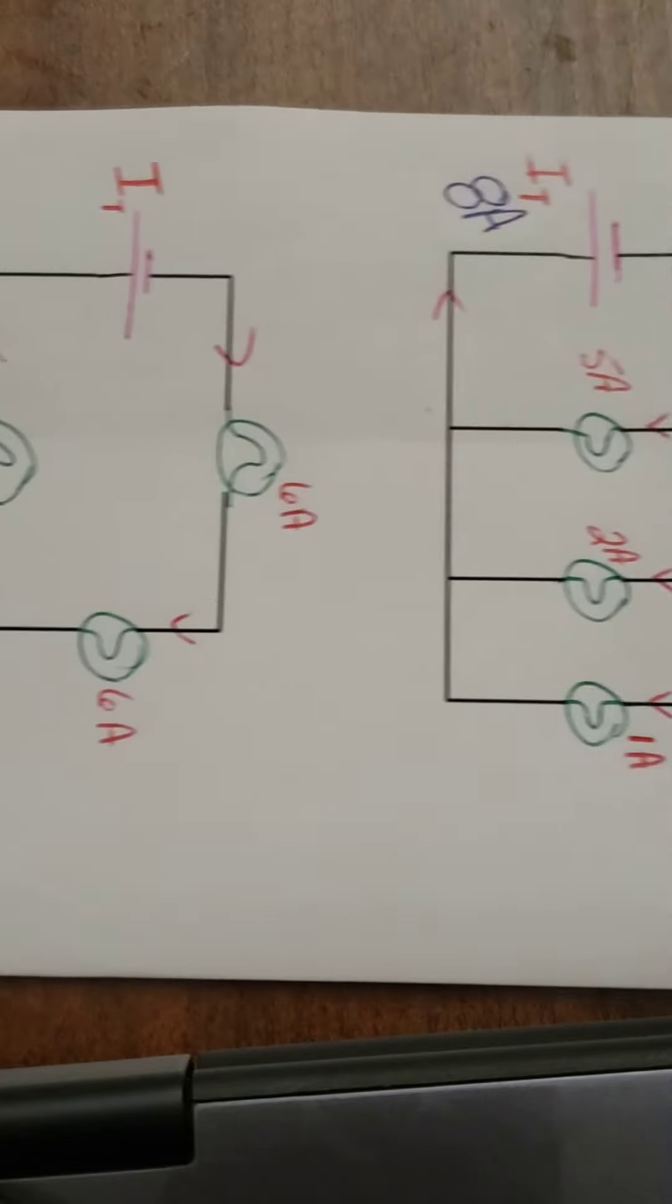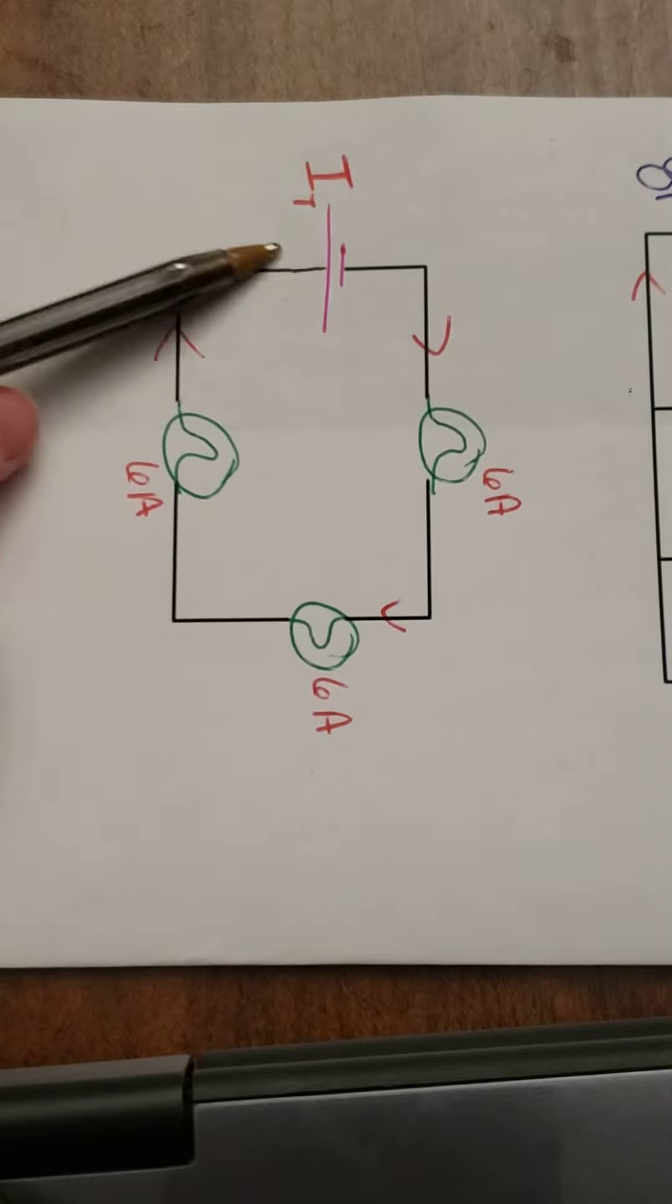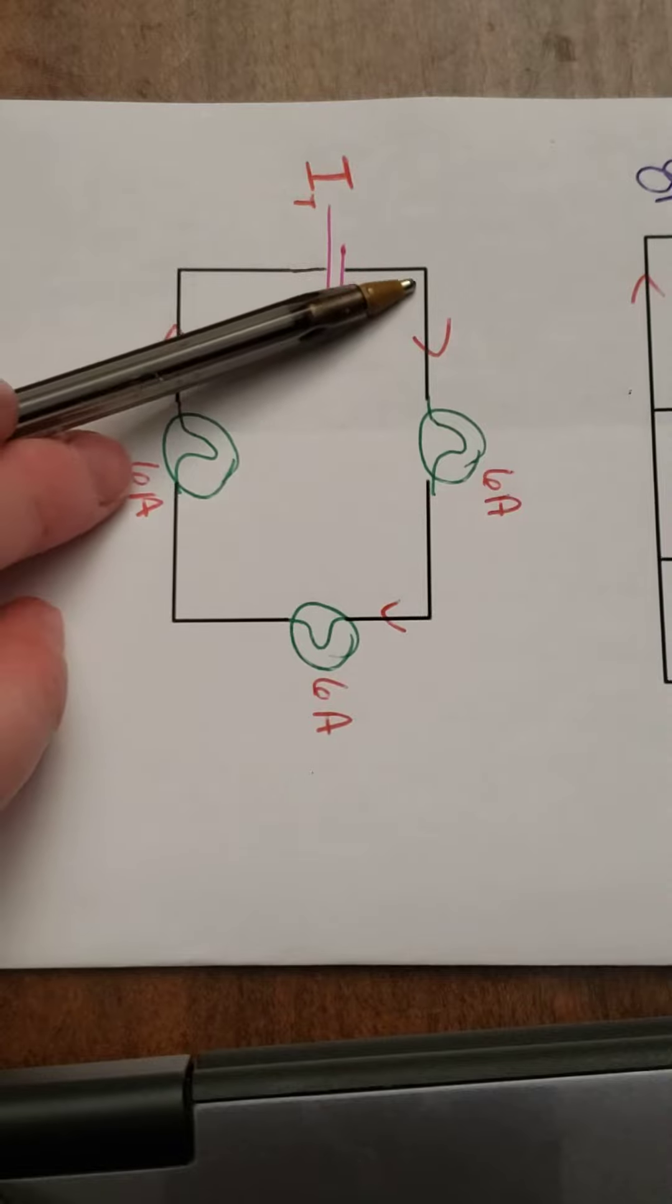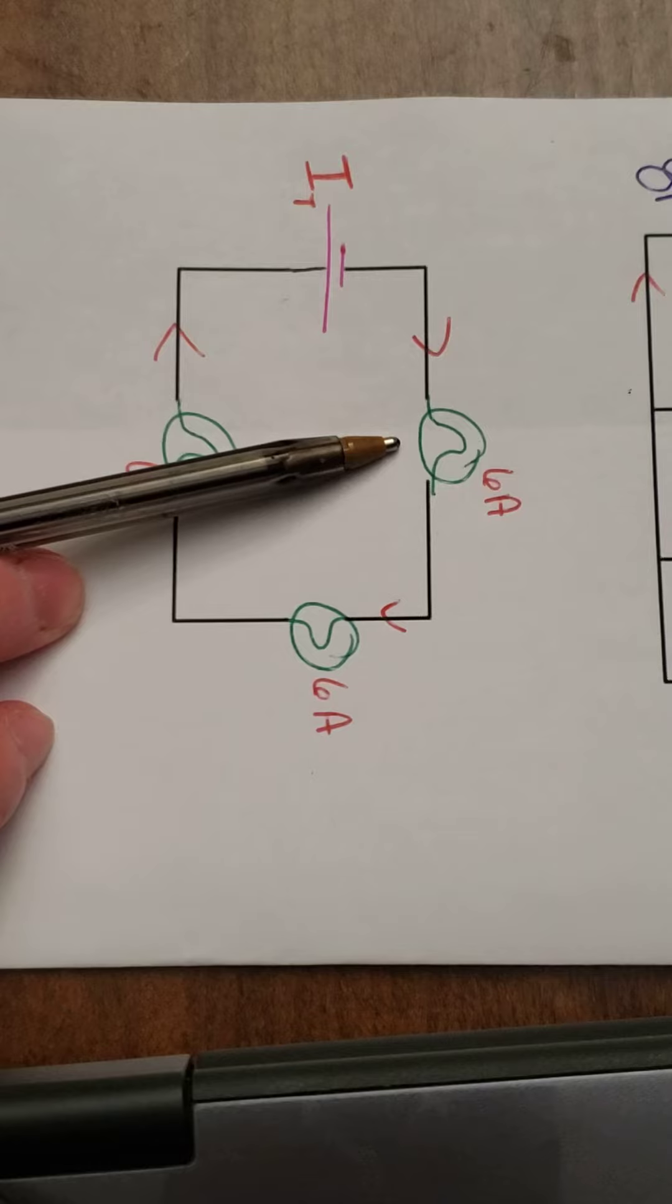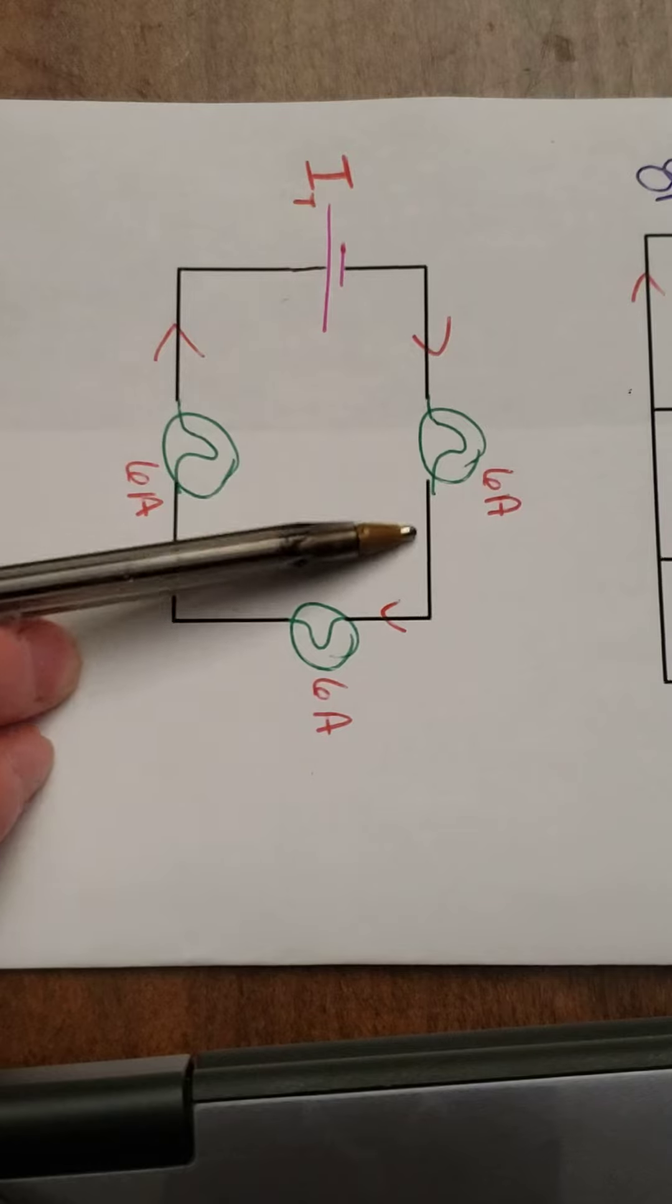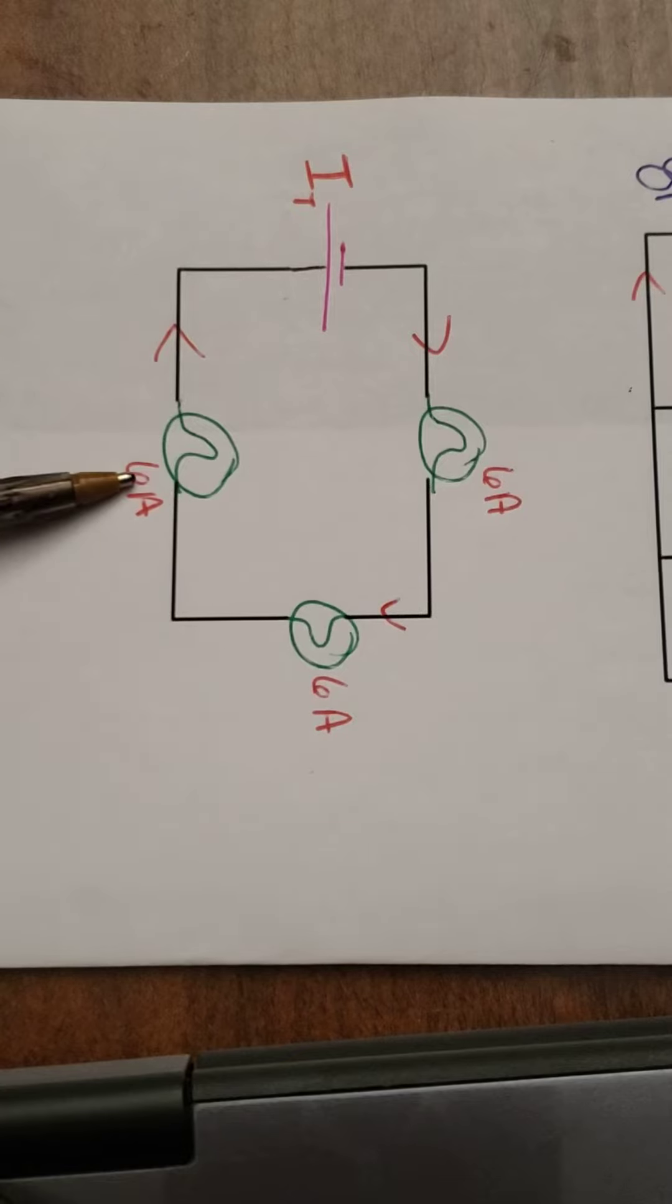Let's do another example. This is an example of a series circuit. And again, I'm looking for the total current in the circuit. Well, I see here that 6 amps or 6 packages of electrons went through the first light bulb, 6 amps or packages of electrons went through the second, and 6 went through the third.